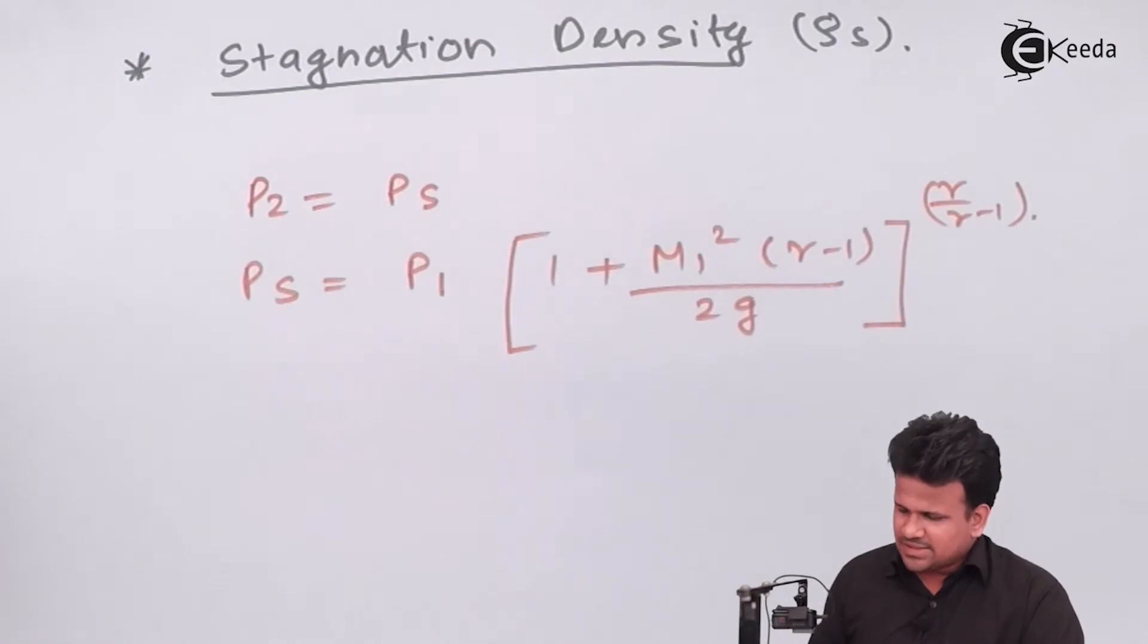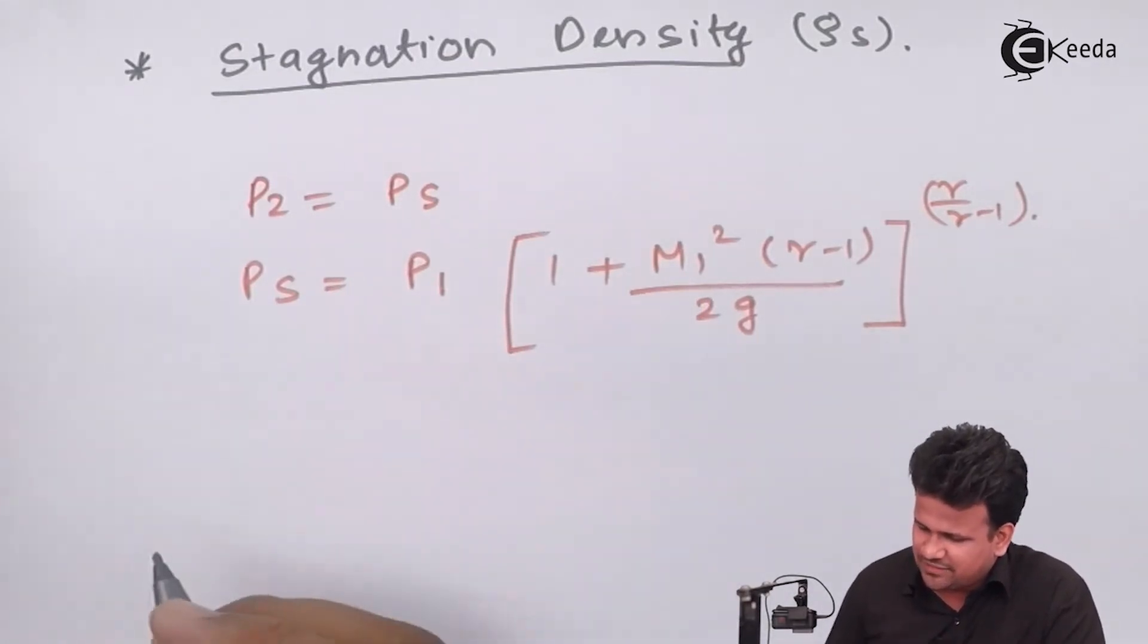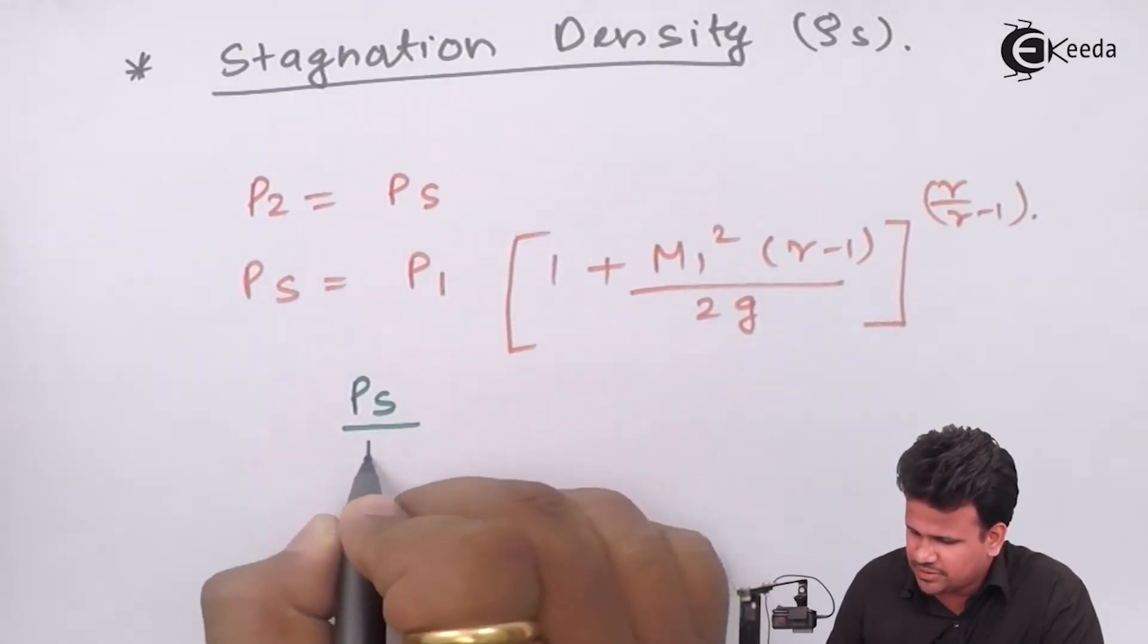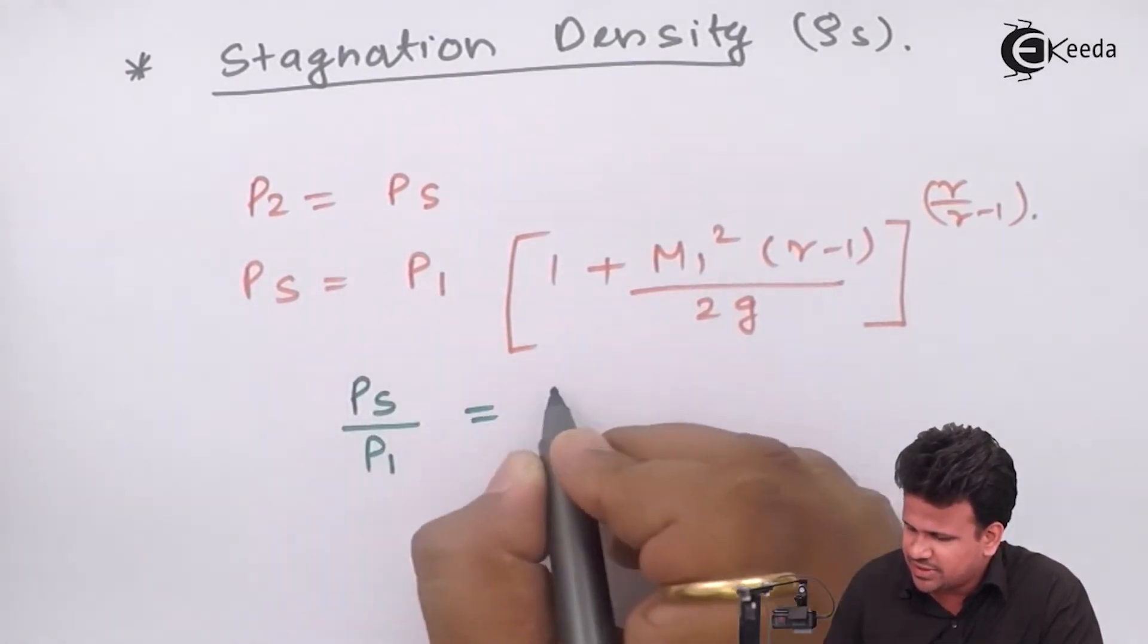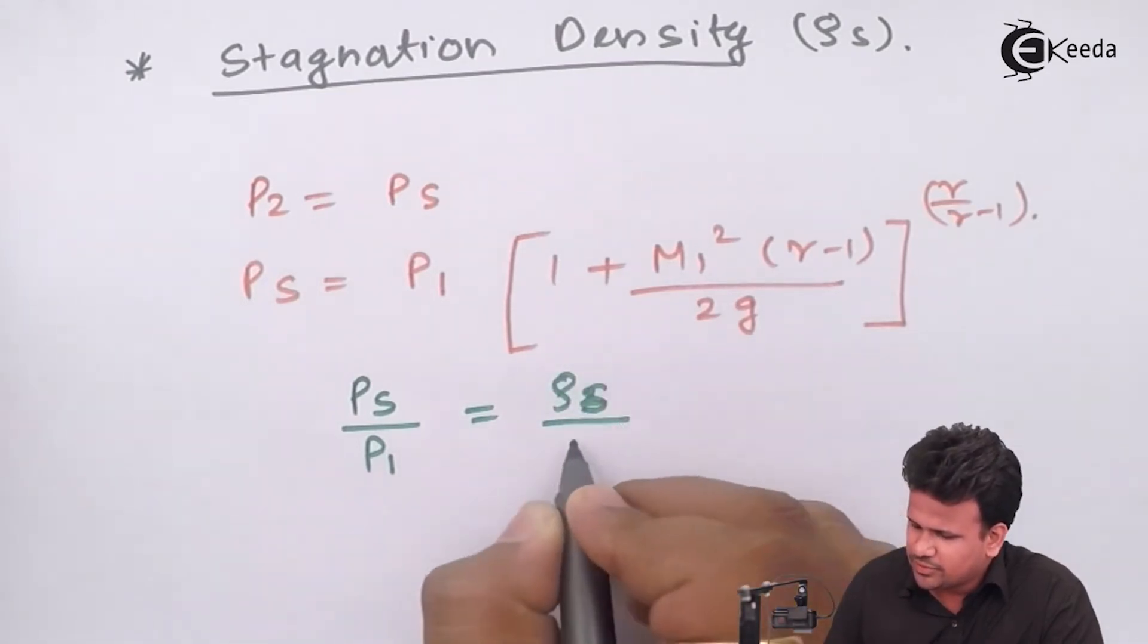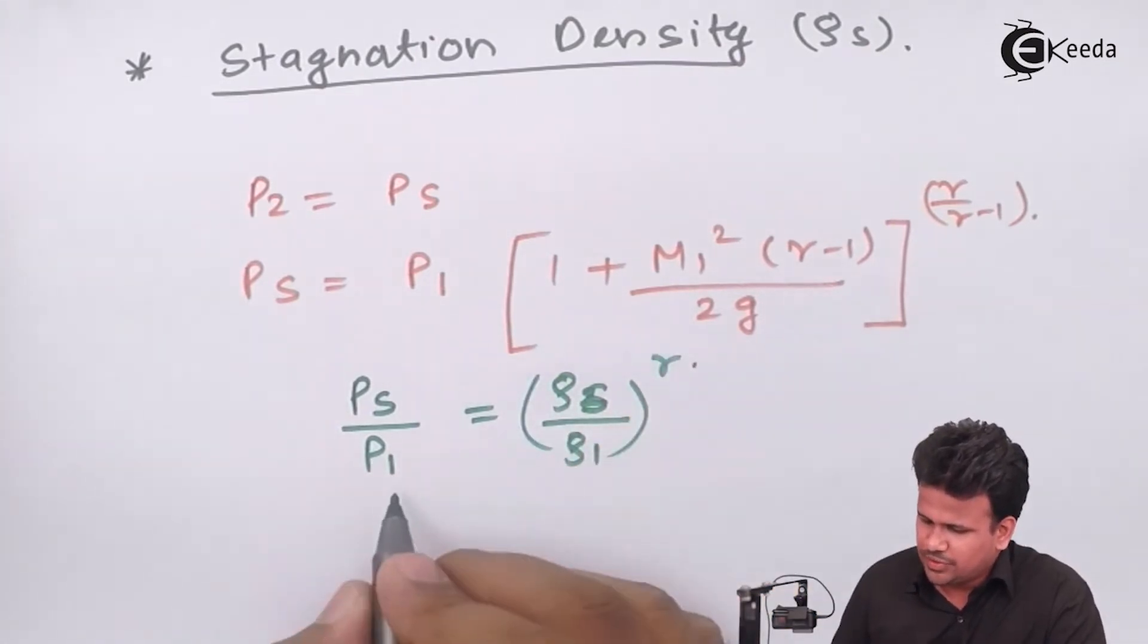Let us consider the process as adiabatic and calculate the relationship of stagnation pressure with stagnation density. This can be given as P stagnation upon P1 equals rho stagnation by rho 1 raised to gamma.